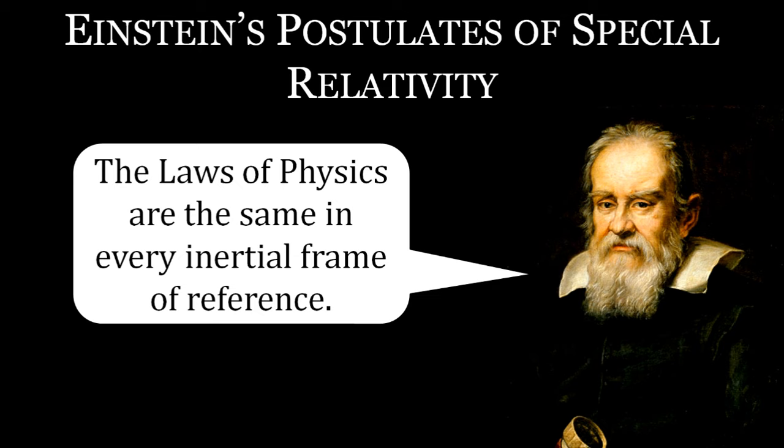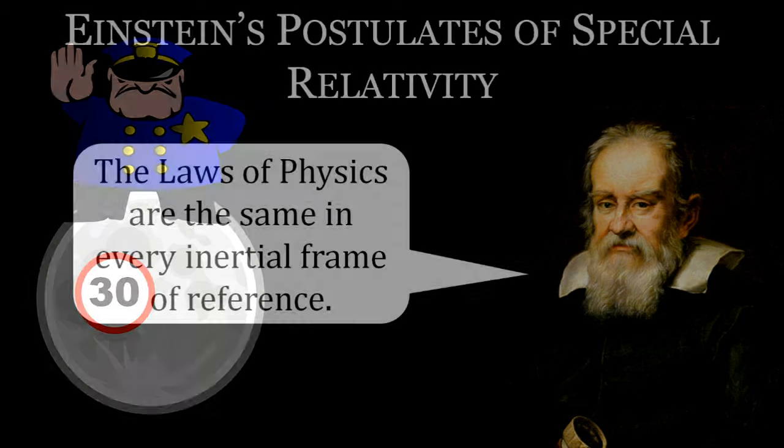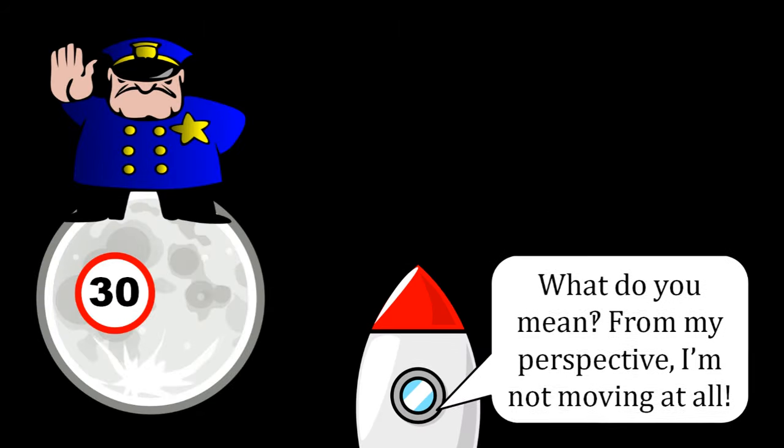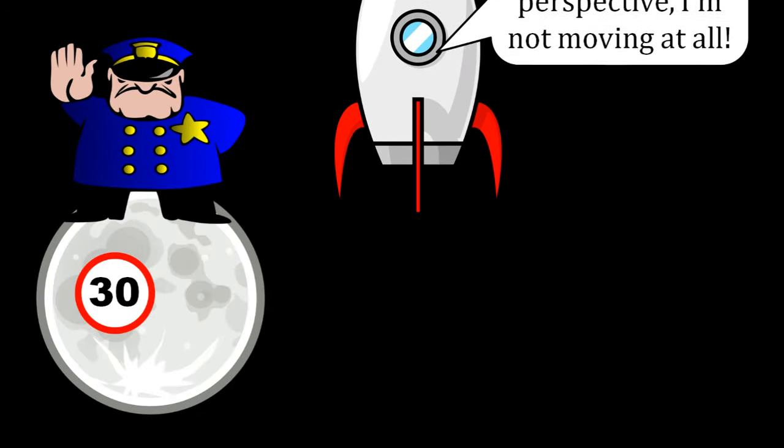Einstein built his theory of special relativity on two postulates, fundamental assumptions that he derived everything else from. The first is Galileo's good old-fashioned principle of relativity, that laws of physics are the same in every inertial frame of reference, i.e., to the point of view of an observer moving at a constant velocity, it is impossible for them to tell that they are moving.